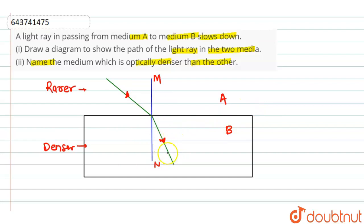As the refracted ray slightly bends towards the normal, here we can say that medium B is optically denser than medium A.